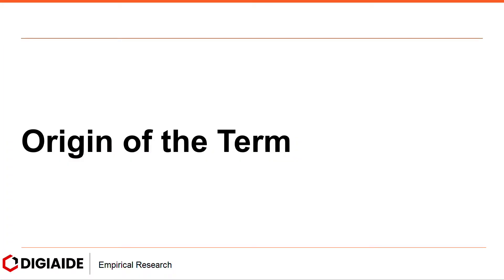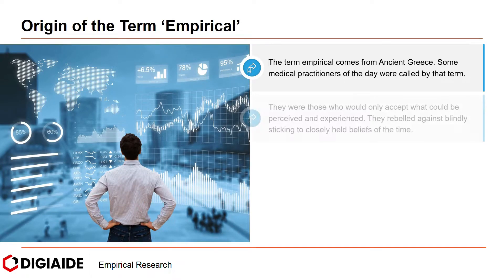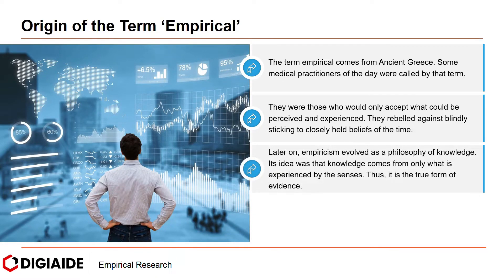Moving on to the origin of the term. The term empirical comes from ancient Greece. Some medical practitioners of the day were called by that term. They were those who could only accept what could be perceived and experienced. They rebelled against blindly sticking to closely held beliefs at the time. Later on, empirism evolved as a philosophy of knowledge. Its idea was that knowledge comes from only what is experienced by the senses. Thus, it is a true form of evidence.